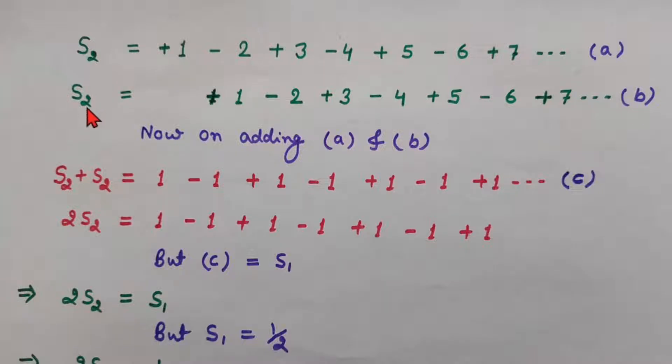S2 plus S2, left hand side I have added. And on adding the right hand side, you see term by term, this is the first term. And here first term, you can assume 0. So plus 1 plus 0 is 1.